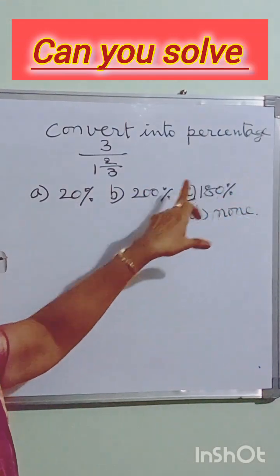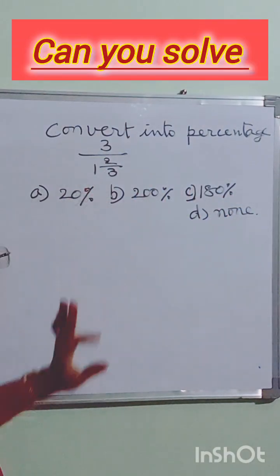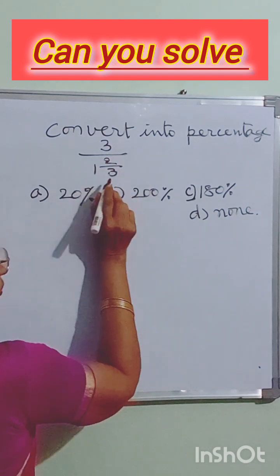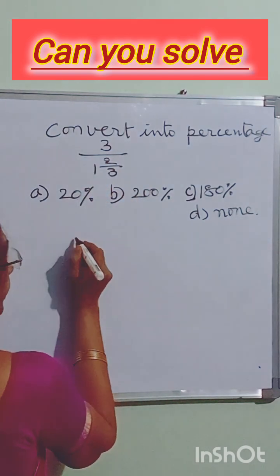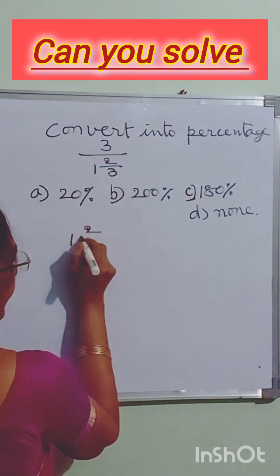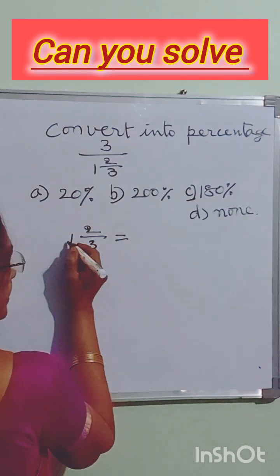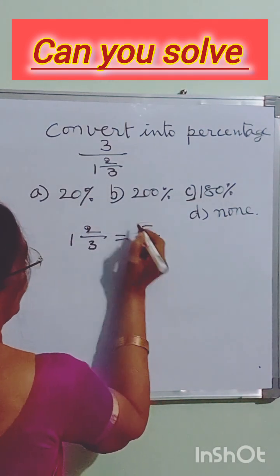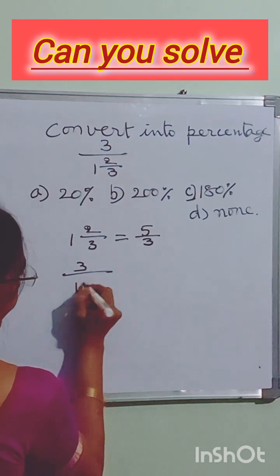Convert it into percentage. A fraction is given, so first we will convert this fraction in the denominator into an improper fraction. 1 2/3 is equal to — 3 times 1 is 3, plus 2 is 5 — so 5/3.